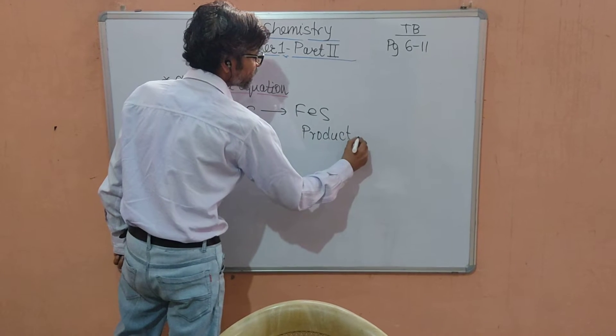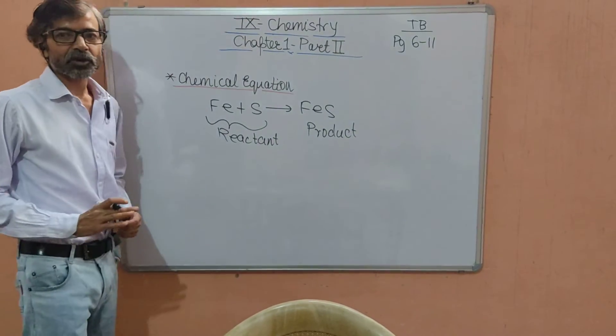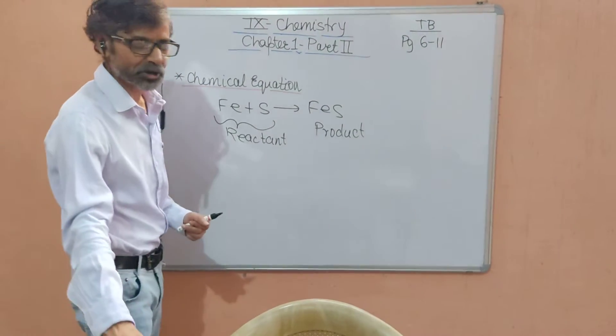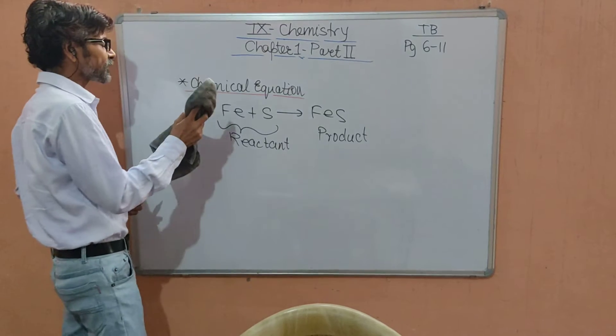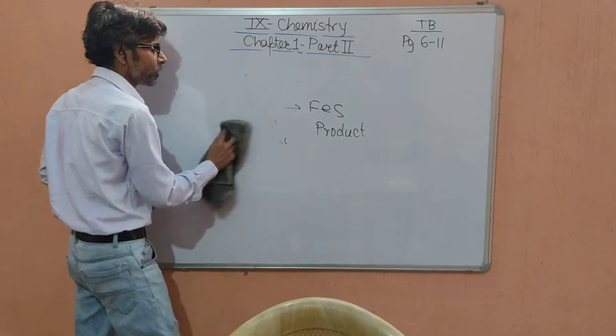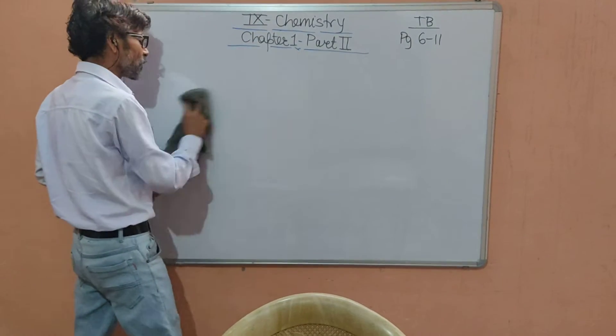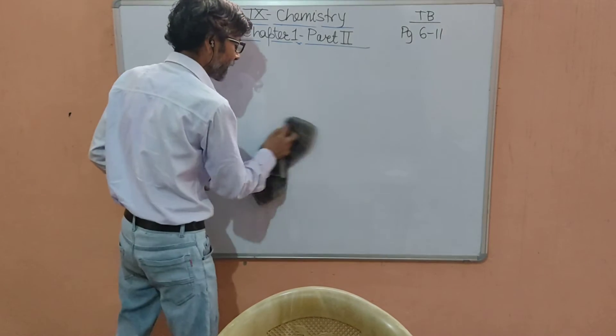A chemical equation has to be balanced to comply with the law of conservation of matter. To balance the chemical equation, many methods are there, but the method which is most common is called trial and error method, or some people call it hit and trial method also.